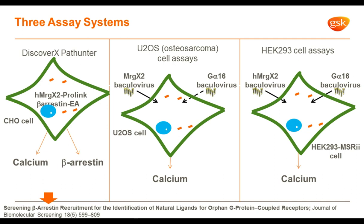The DiscoverX assay is currently only available for the human receptor; for other orthologues we use U2OS or HEK293 cells — immortalized human cell lines — with baculovirus reagents for the receptor. In some cases we also introduce a G-alpha-16 subunit via baculovirus, because it can potentiate the calcium response. We've built baculovirus reagents for all the different candidate orthologues listed previously, using human as a control, and have introduced mouse, rat, dog, mini-pig, and rhesus into U2OS cells. We also use human MRGPRX1 rather than X2 as the most closely related receptor, allowing us to examine agonist specificity.